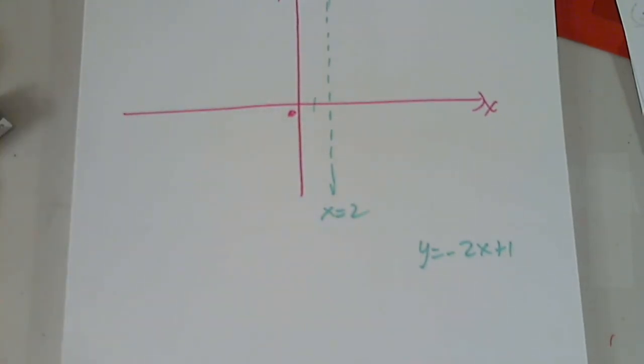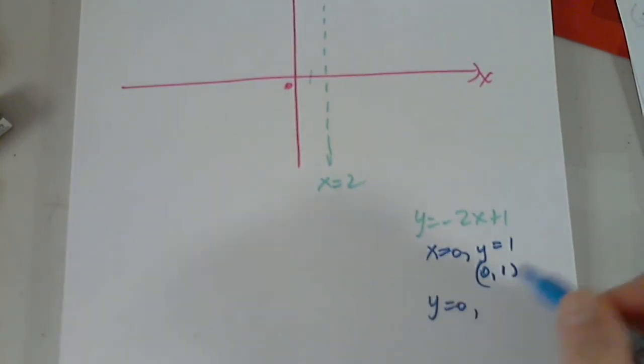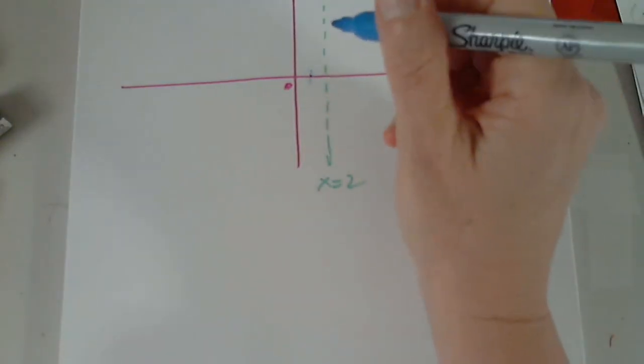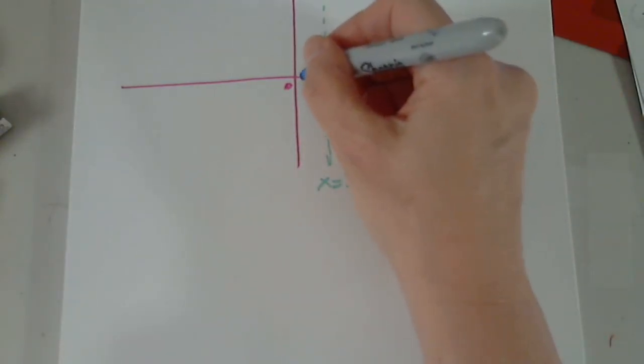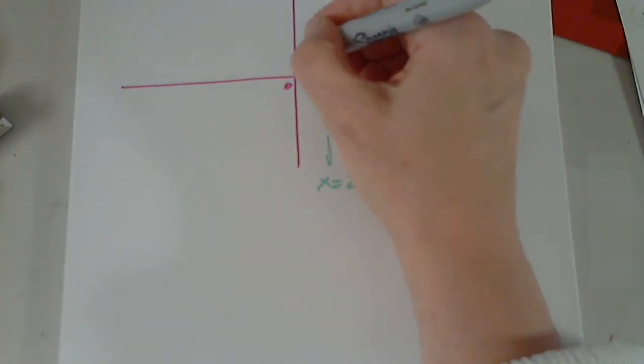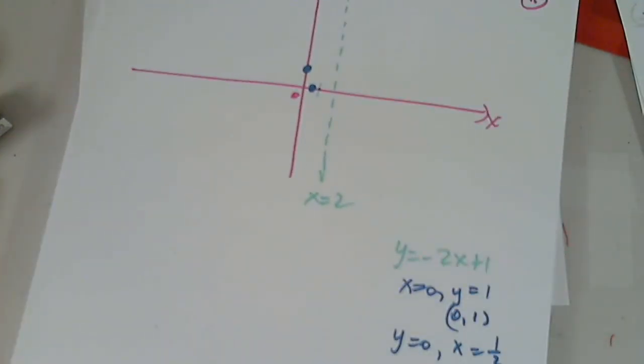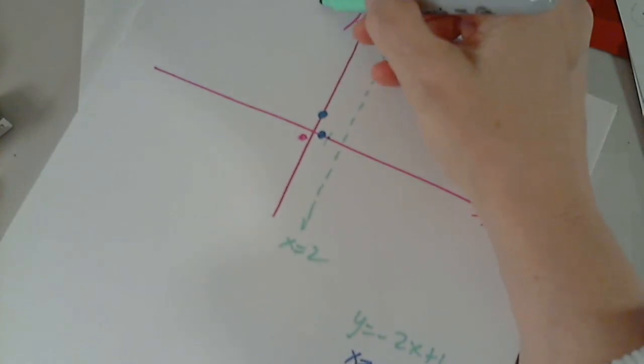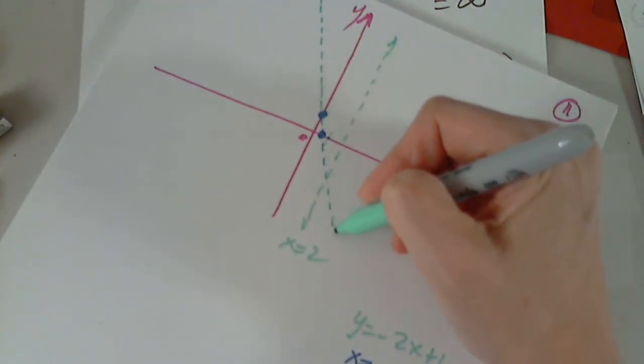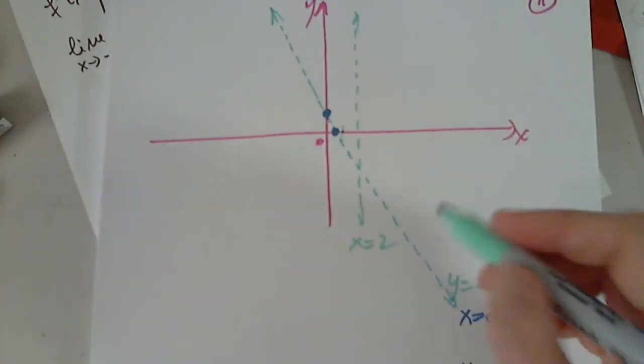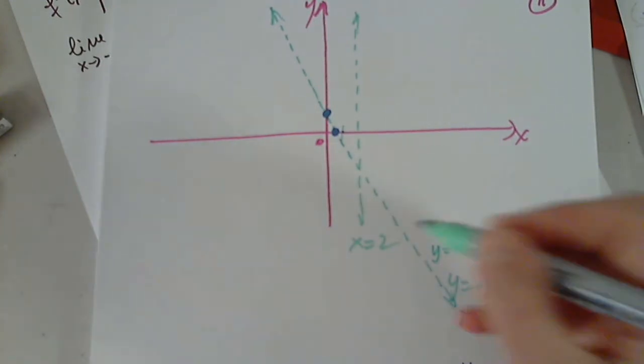And y equals negative 2x plus 1 is the slant asymptote. I have to find the x and y intercepts. When x is 0, y is 1. So 0 comma 1. When y is 0, x is 1 half. So 1 half comma 0. When y is 0, I move 2x. 2x equals 1. So x equals 1 half. So 1 half 0. And 0 comma 1. I want to use the same color for the asymptotes. So this is y equals negative 2x plus 1. Back to my table.